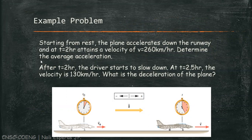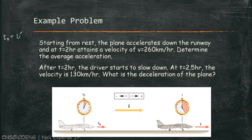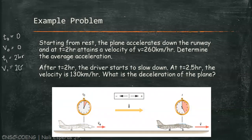Starting from rest, the plane accelerates down the runway. So, our given: starting at rest means our initial time is 0 and our initial velocity is 0. And we have a time of 2 hours. The plane accelerates to a speed of 260 kilometers per hour. So, let's solve for the average acceleration.